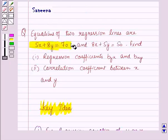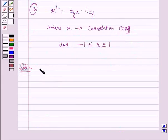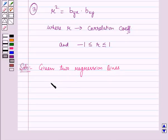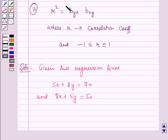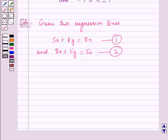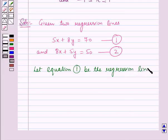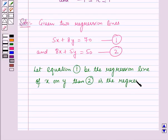Now the two regression lines are given to us. The two regression lines are: 5x plus 8y is equal to 70, and 8x plus 5y is equal to 50. Let this be equation number 1 and this be equation number 2. Now let equation number 1 be the regression line of x on y, then equation 2 is the regression line of y on x.